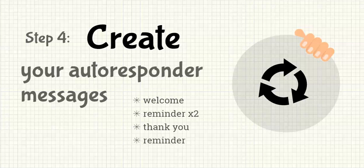Step four is creating your autoresponder messages — literally outlining what you're going to say and when to send it. The first email is a welcome message covering what to expect and a reminder of when the event starts. Then, depending on how long you're promoting, you'd send reminder emails at intervals. For example, with a seven-day promotion window, you might send a reminder three days after sign-up, then again two days later. With a three-to-five day window, make sure you send a reminder the day before and the day of.